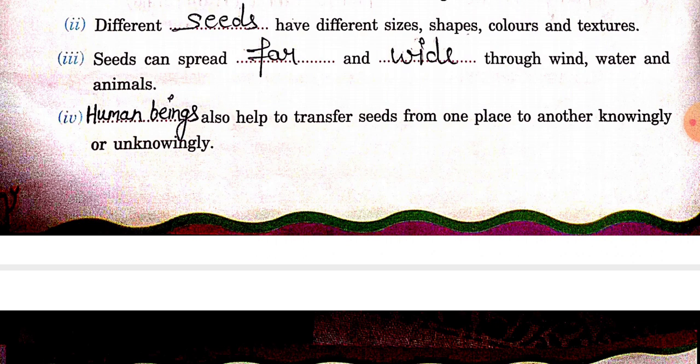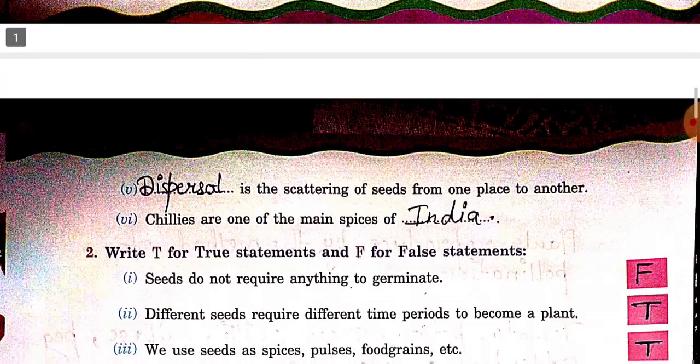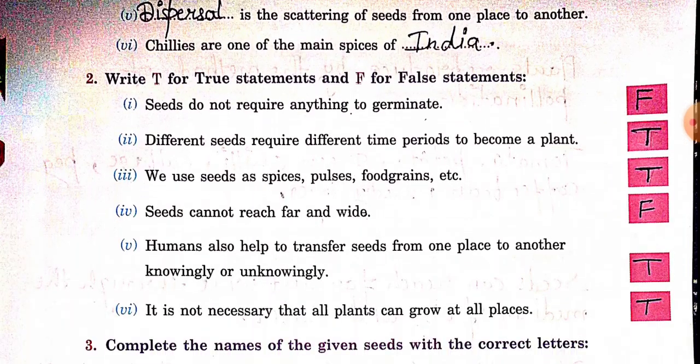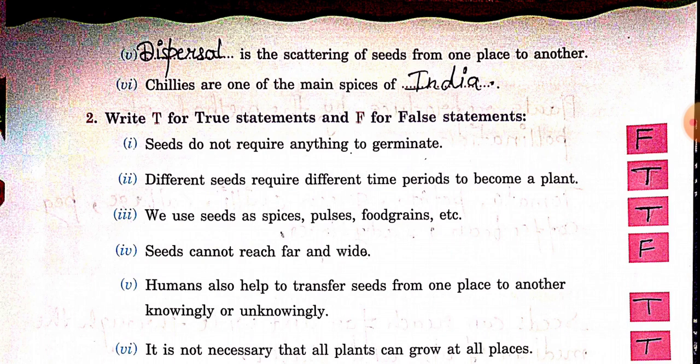Fourth: human beings also help to transfer seeds from one place to another, knowingly or unknowingly. Fifth: dispersal is the scattering of seeds from one place to another.